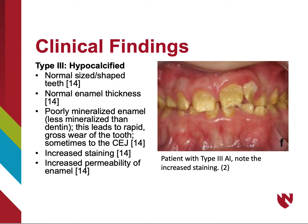In type 3, teeth are normal size and shape, with normal enamel thickness. The enamel is, however, poorly mineralized — less so than dentin. There also can be increased staining and permeability of enamel.